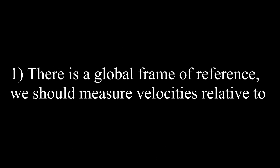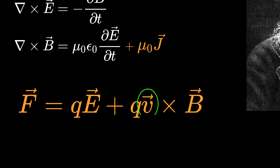There are only two possible resolutions to this problem. First, there is a global frame of reference relative to which we should measure all velocities — which would break Galilean relativity, but all observers would use the same velocity in the Lorentz force equation and therefore get the same force.